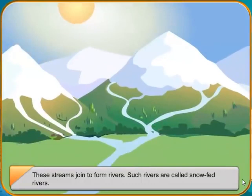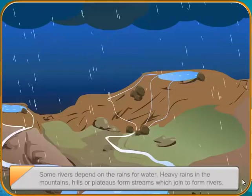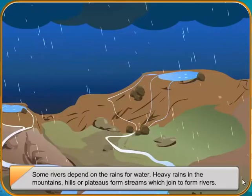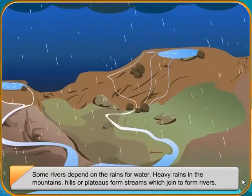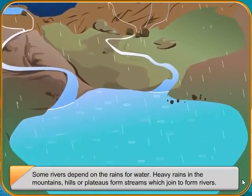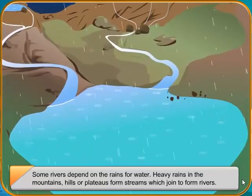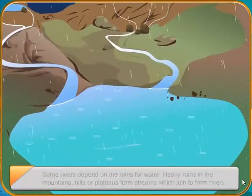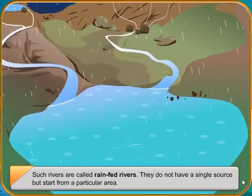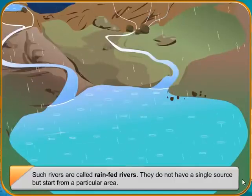What is the difference between a stream and a river? Some rivers depend on the rains for water. Heavy rains in the mountains, hills or plateaus form streams which join to form rivers. Such rivers are called rain-fed rivers. They do not have a single source but start from a particular area.